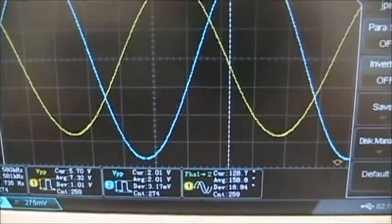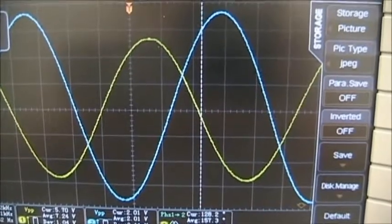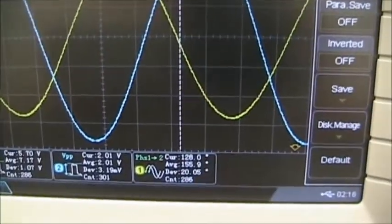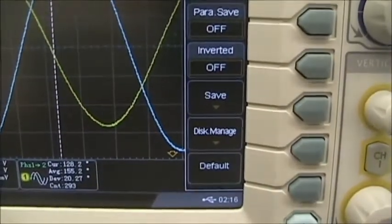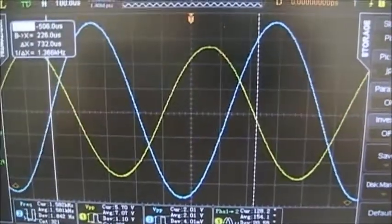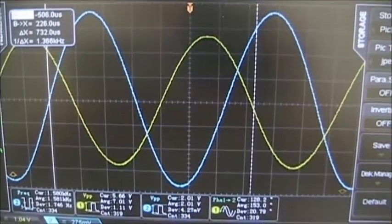Now the output of that amplifier is smaller, 5.7 volts peak-to-peak. The input is still the same, and the phase shift is now 128 degrees. What has happened is that RC network has caused a loss at that frequency, about 0.707.